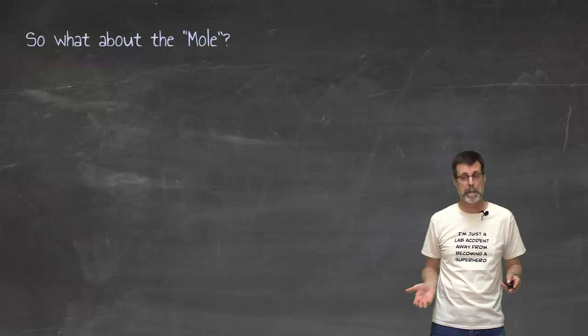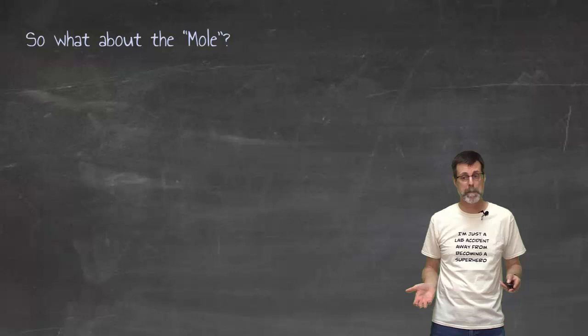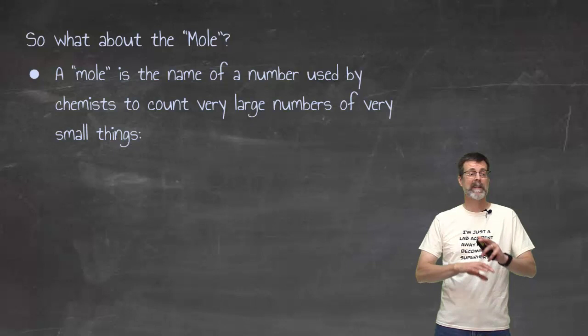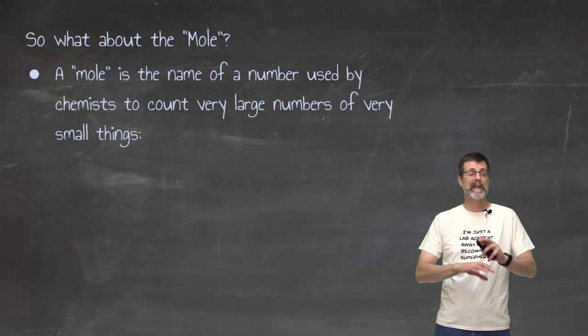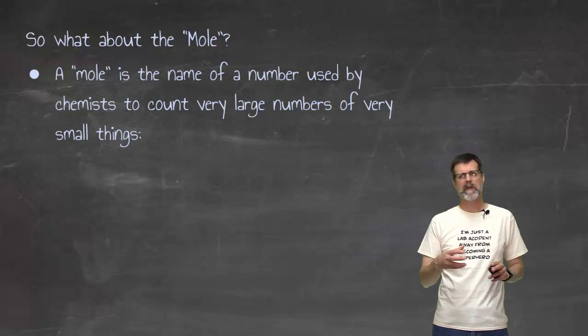Mole is just a big number. So it's a large number that we use exclusively in chemistry to count very large numbers of very small things. And the only use of it is in chemistry, which is one of the reasons why people think it's difficult is because it's a new word for a new number.